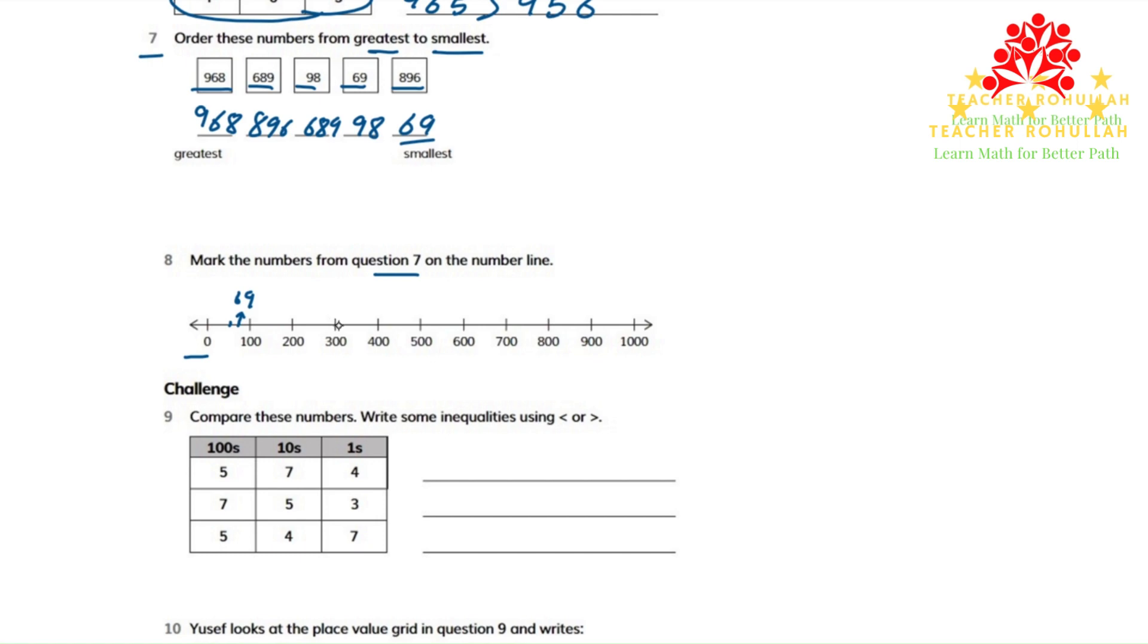The second number is 98. 98 is very close to 100, so it can be in this place. 98 is almost 100.